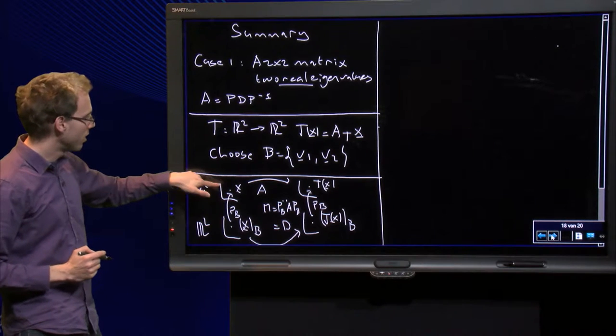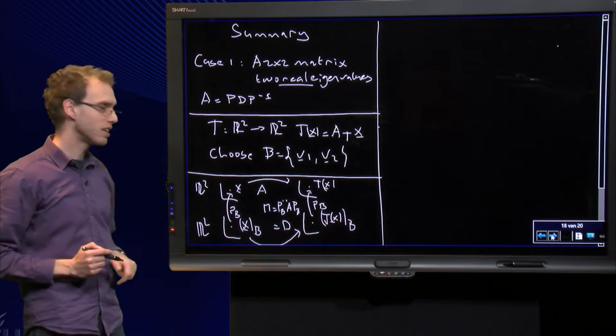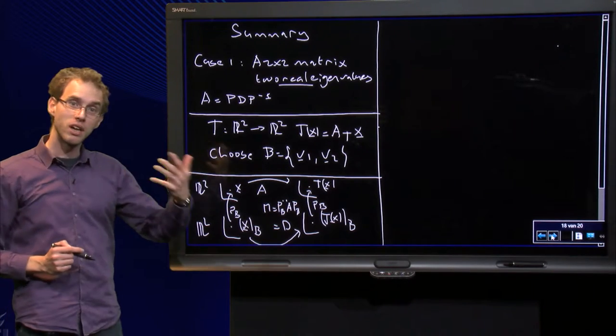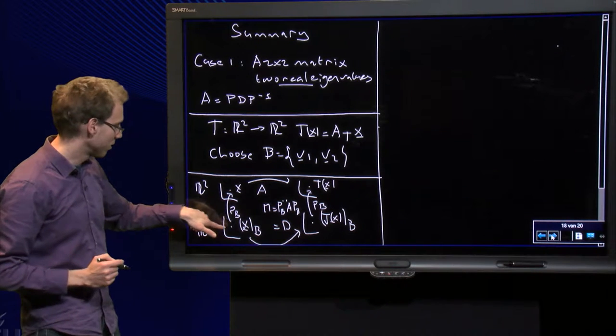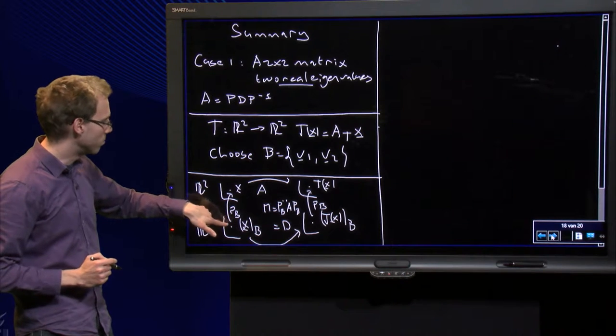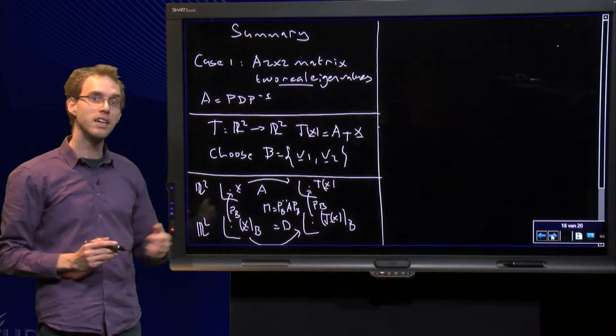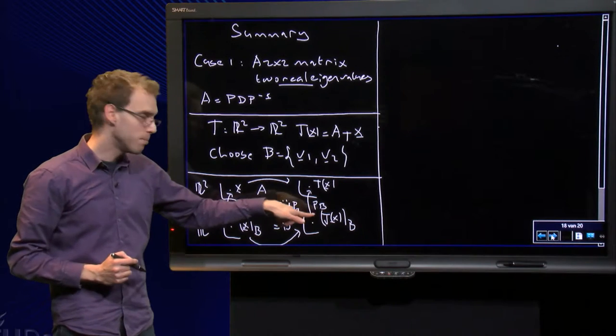Then we get the following picture. Here we have our X. The transformation A maps it to T of X. We can also give the B-coordinates of a vector X. We get X tilde which is mapped to X by the matrix P, which consists of the two eigenvectors.